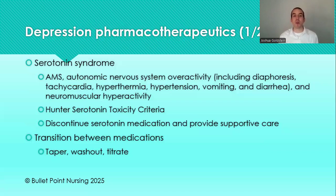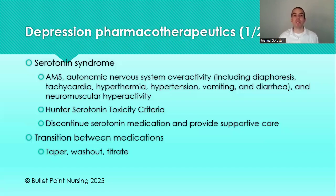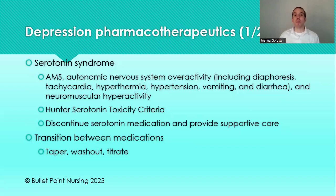There is something called the Hunter Serotonin Toxicity Criteria, which is part of how we diagnose serotonin syndrome. Treatment has no single specific approach and depends on which medication caused the overdose. First, determine what happened — did they get too high a dose, were they taking too much, did they overdose on purpose? Discontinue the causative serotonin medication, and provide supportive care such as treating hypertension with a beta blocker.